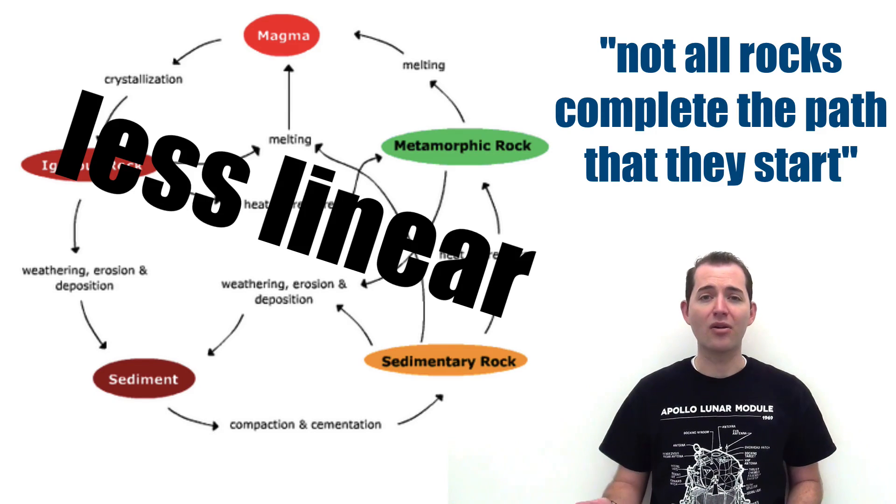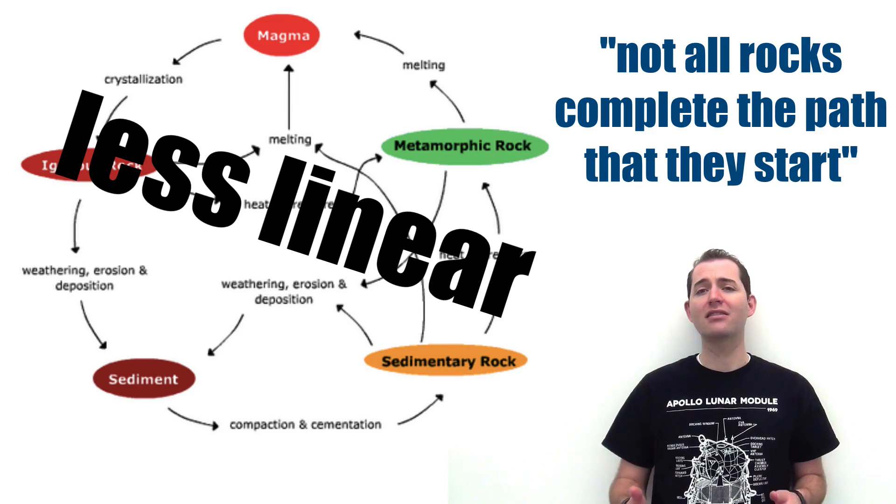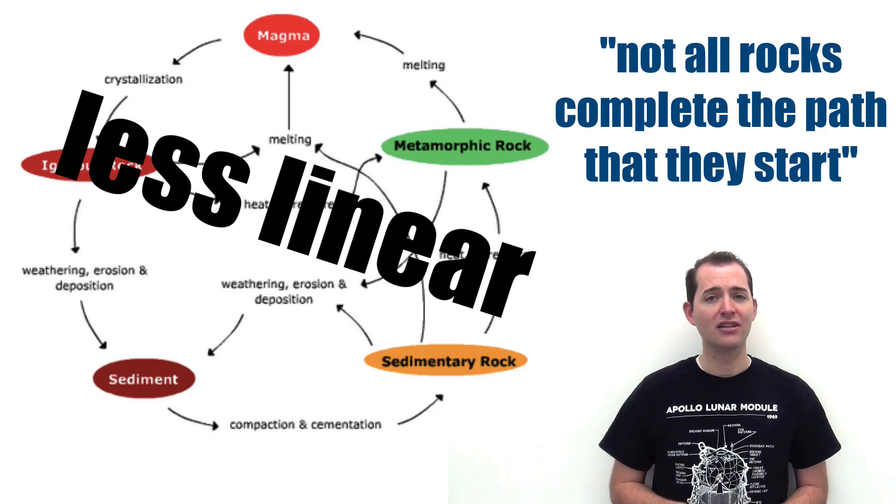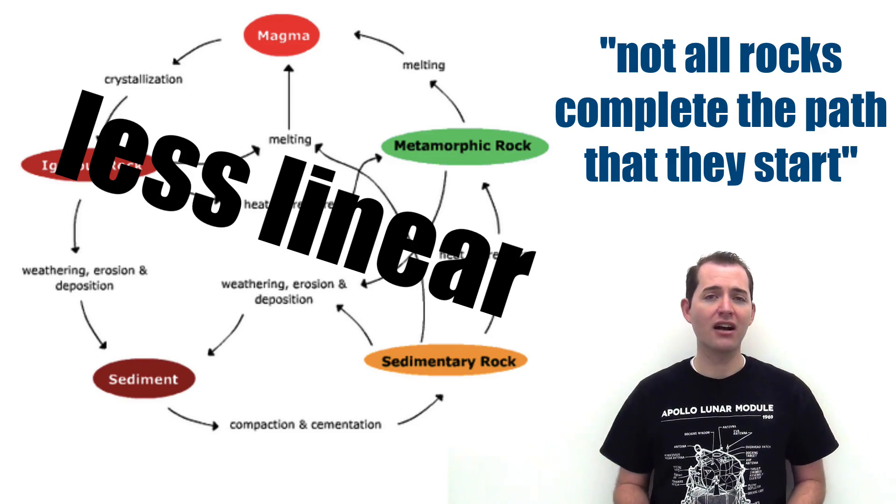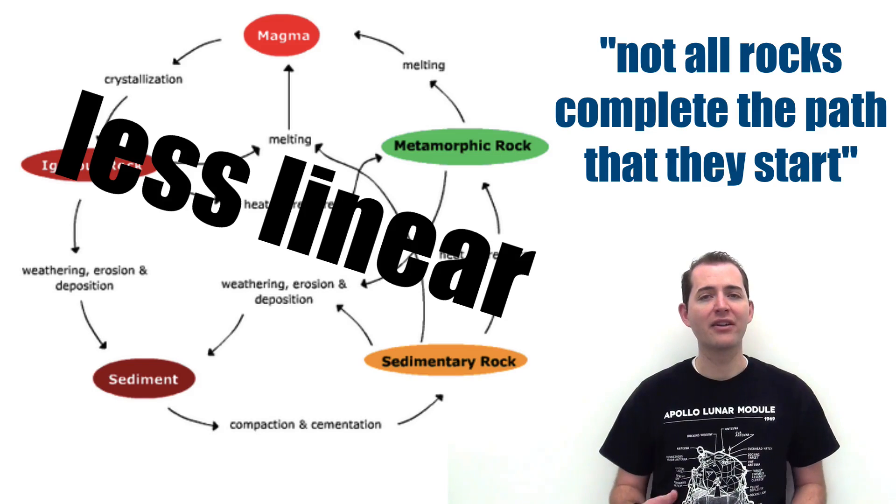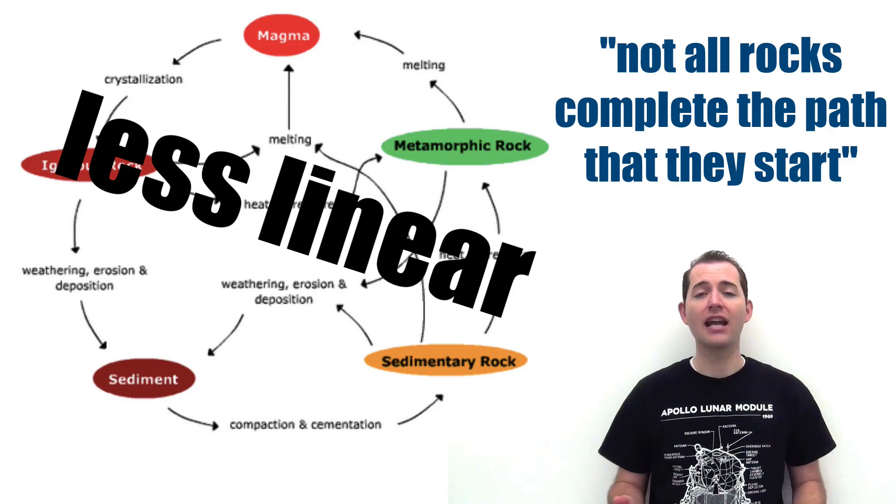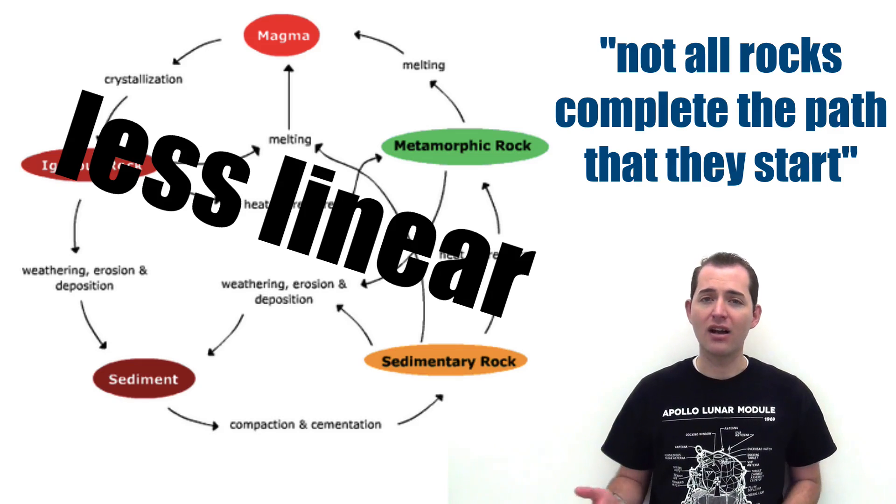They might be subducted or pushed underground by plate tectonic movement, and become melted and cooled and form an igneous rock. So again, not every rock that starts on a specific path reaches the end of it. This is a representation of the dynamic process that is the Rock Cycle.